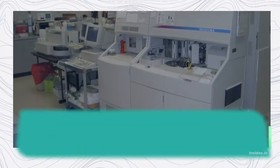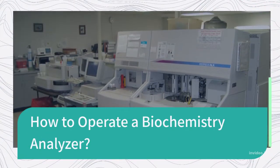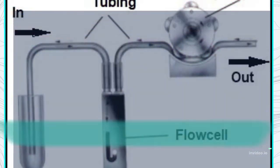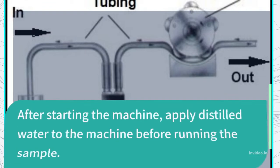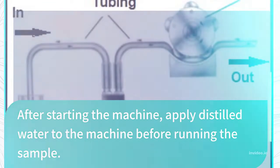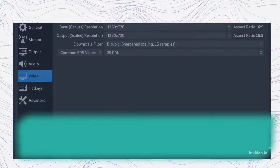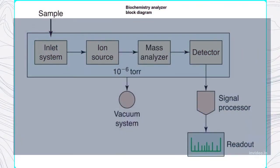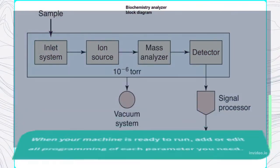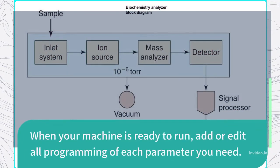To operate a biochemistry analyzer, after starting the machine, apply distilled water to the machine before running the sample. Then be sure to set the standard. When your machine is ready to run, add or edit all programming of each parameter you need.